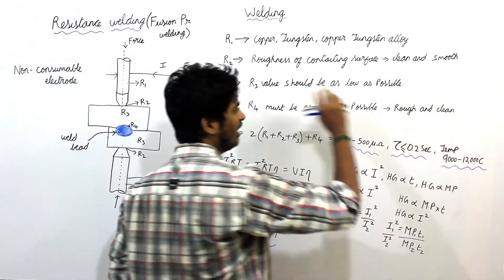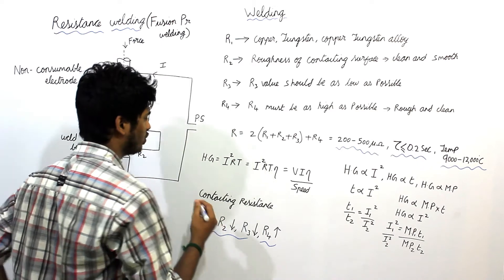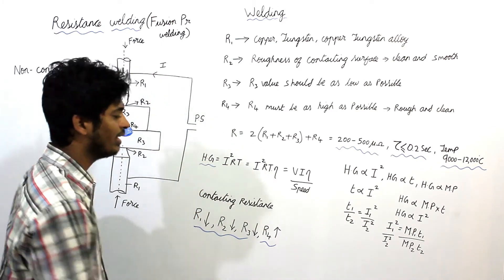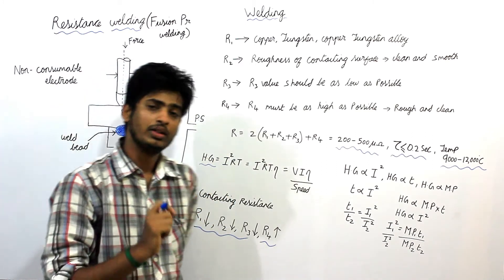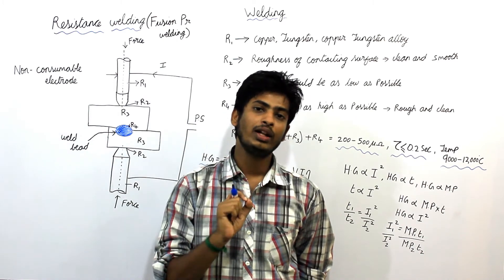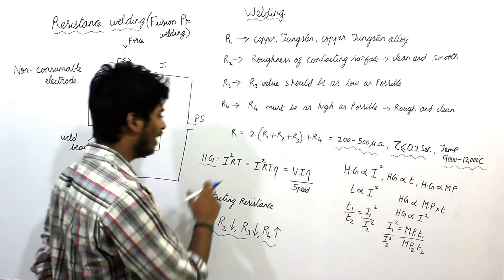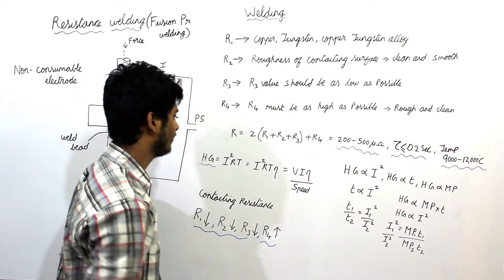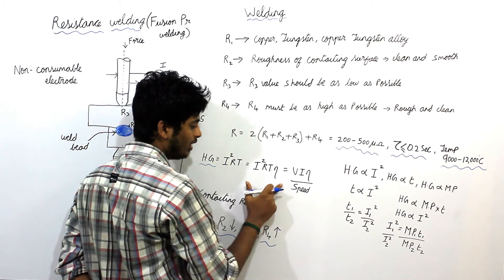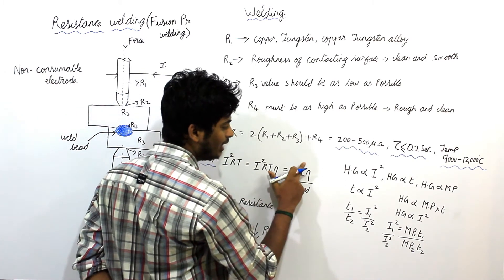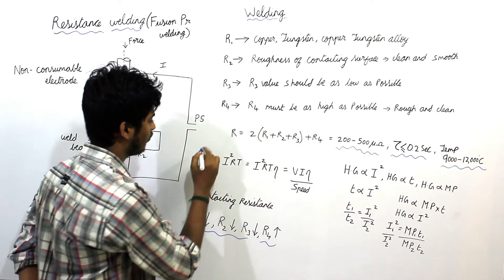For the exam, the most important formula is for heat generated: H = I²RT, where I is current in amps, R is resistance in ohms — note that R is often given in micro-ohms and must be converted by multiplying by 10 to the power of minus 6 — and T is time taken for the welding operation. It can also be written as I²RT × efficiency, or as V × I × efficiency divided by speed, where V is voltage.